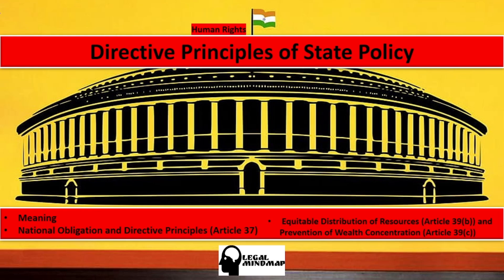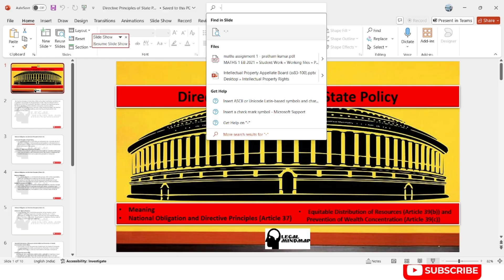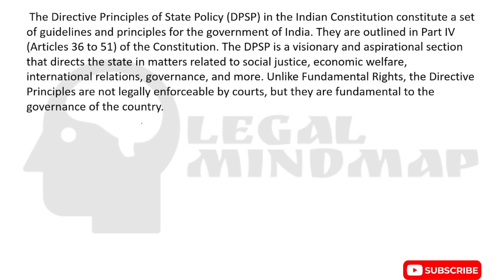Welcome to Legal Mind Map. Today we'll cover Directive Principles of State Policy in human rights — the meaning, national obligations, and directive principles. We'll also cover Article 37, equitable distribution of resources and prevention of wealth concentration under Articles 39B and 39C. The Directive Principles of State Policy are guidelines and principles for the Government of India, outlined in Part 4 of the Constitution, from Article 36 to 51.